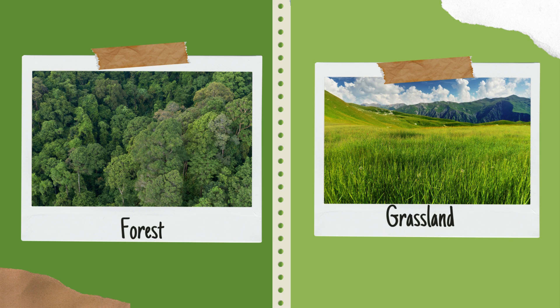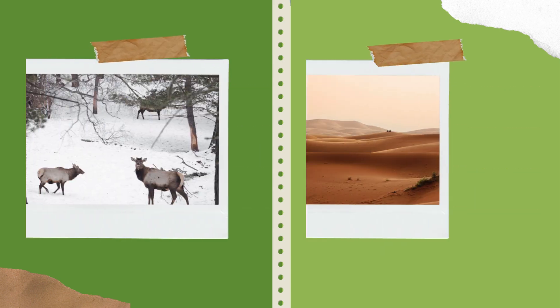Second is grassland. In an ecosystem of grassland, the vegetation is dominated by grass and herbs.